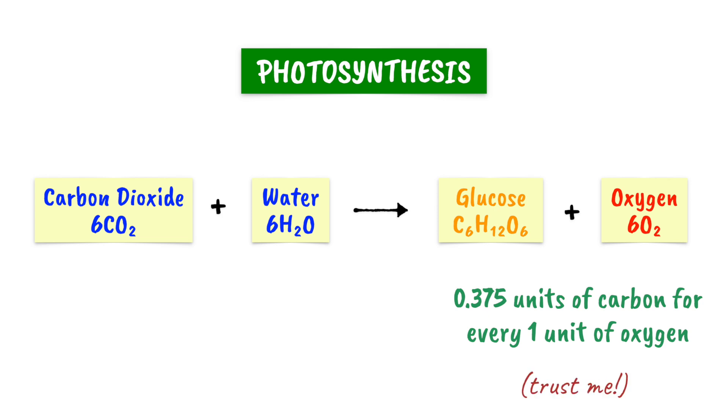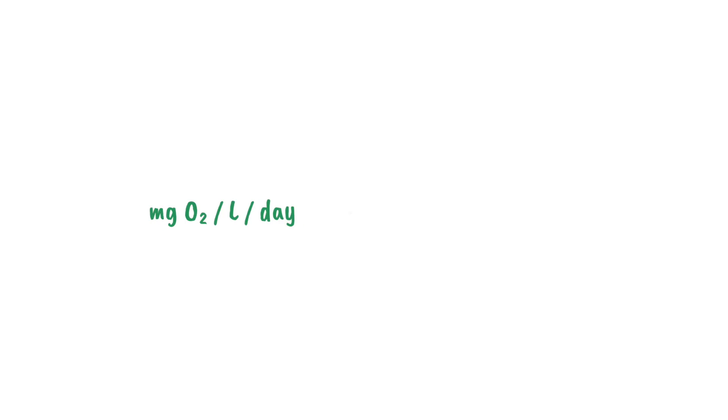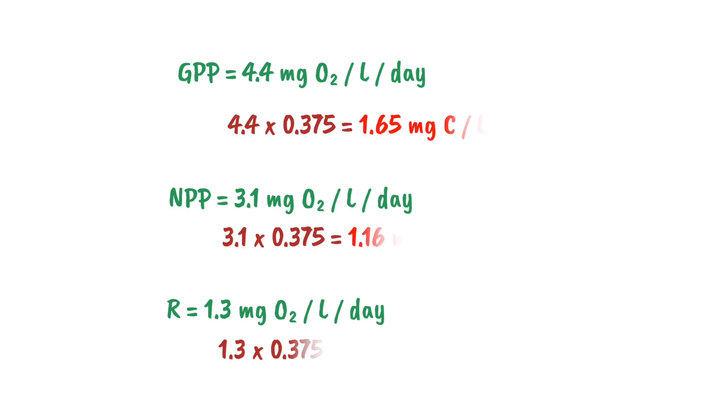So, to convert milligrams of oxygen per litre per day into milligrams of carbon per litre per day, we need to multiply our values by 0.375. So, here are the results for this ecosystem.